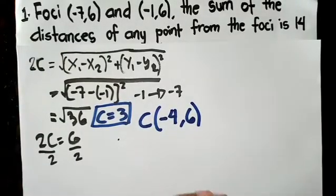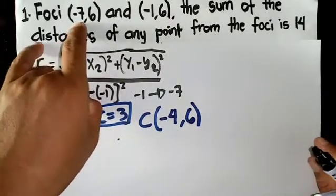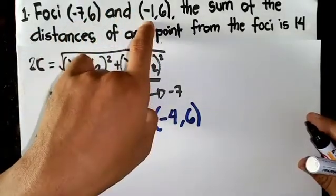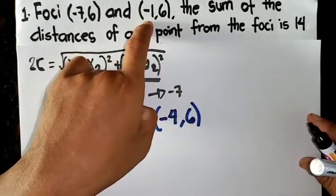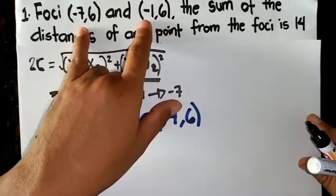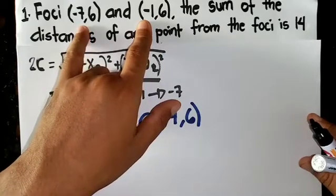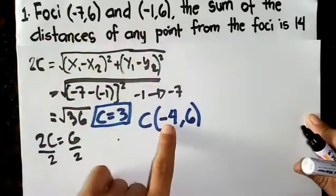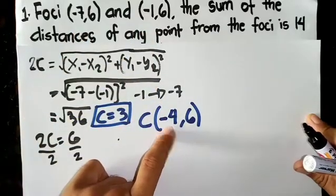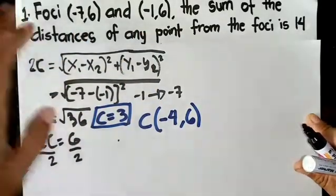Or another solution: -7 and -1, what is their midpoint? -7 plus -1 is -8 divided by 2 equals -4. It depends on your analysis.